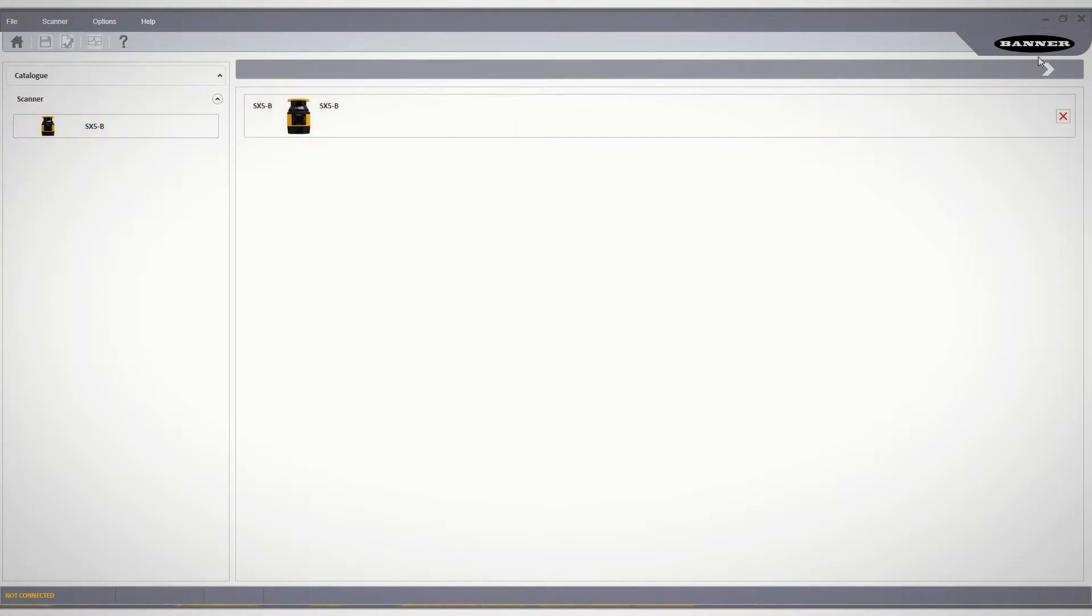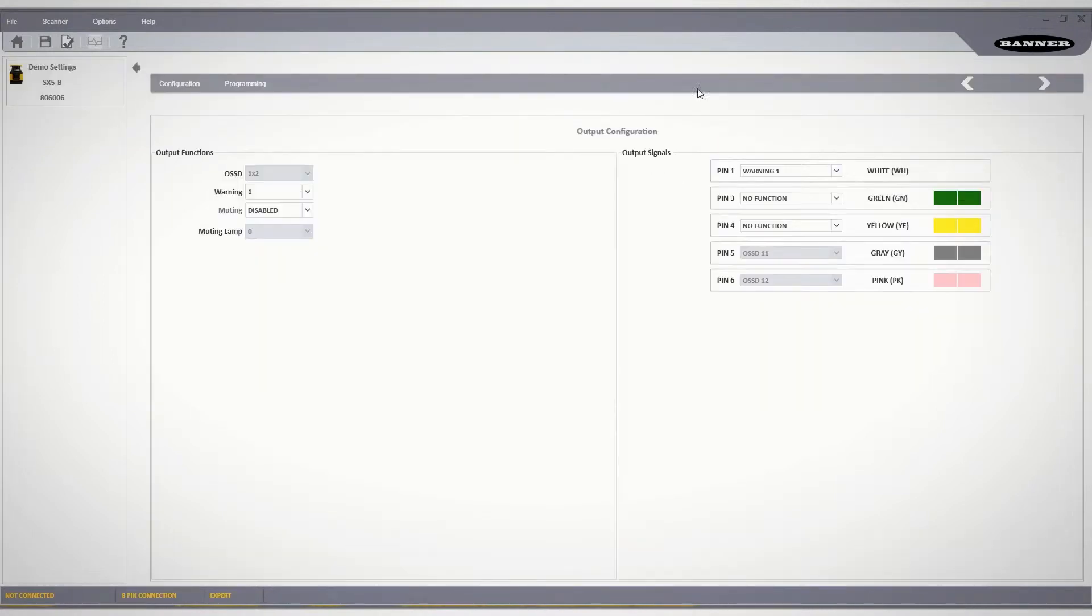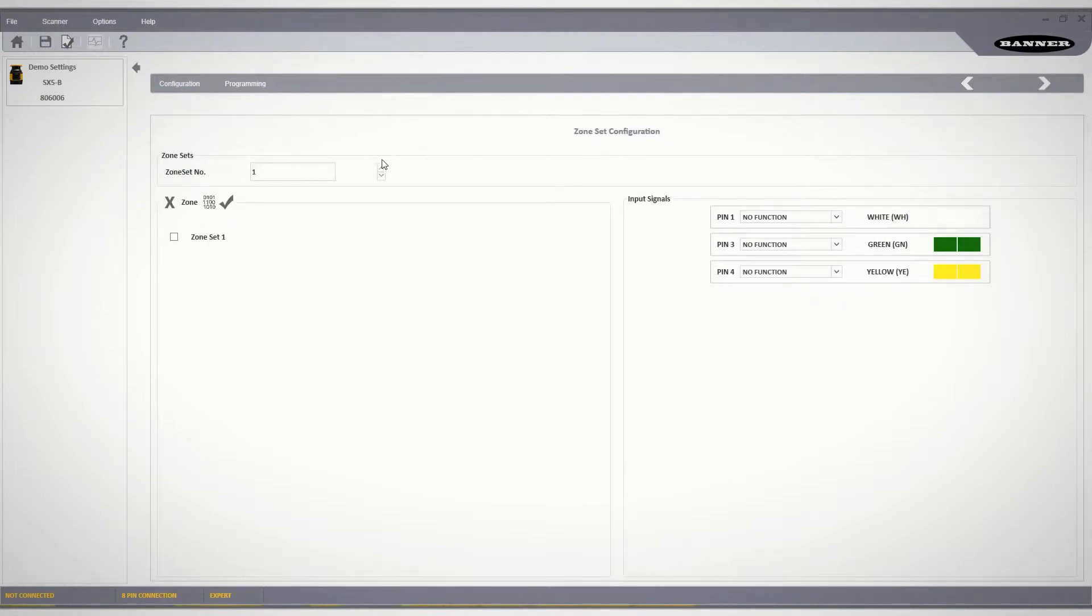Setup is just a few steps using Banner's free configuration software. Menu-driven tools guide the users through setup and make it easy to design up to 6 custom safety and warning zones.